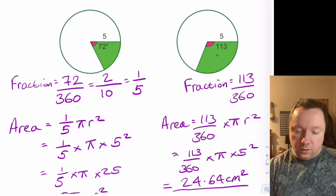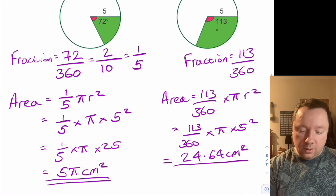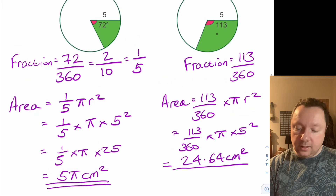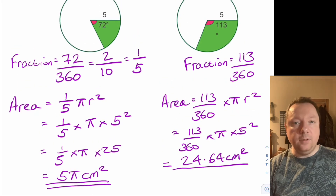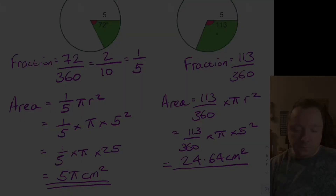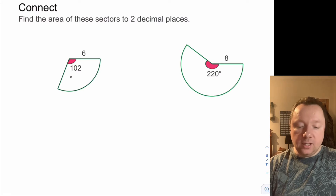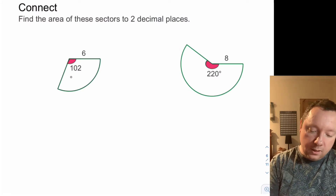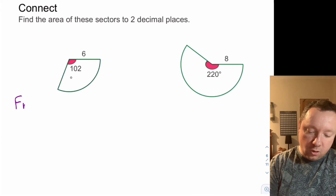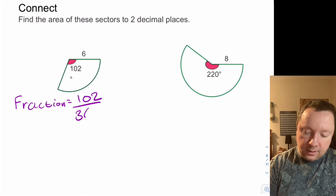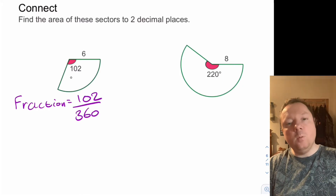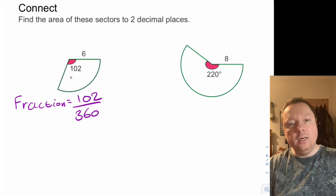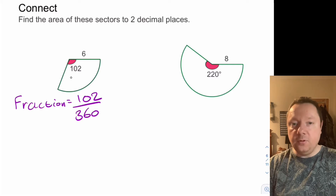That really is as easy as that. So there's the non-calculator method and the calculator method — it's always exactly the same each time. Find the area of these sectors to two decimal places. The fraction always comes first: 102 out of 360. Since the question asks for two decimal places I know I'll need a calculator, so there's no point simplifying that fraction — just giving yourself extra work.